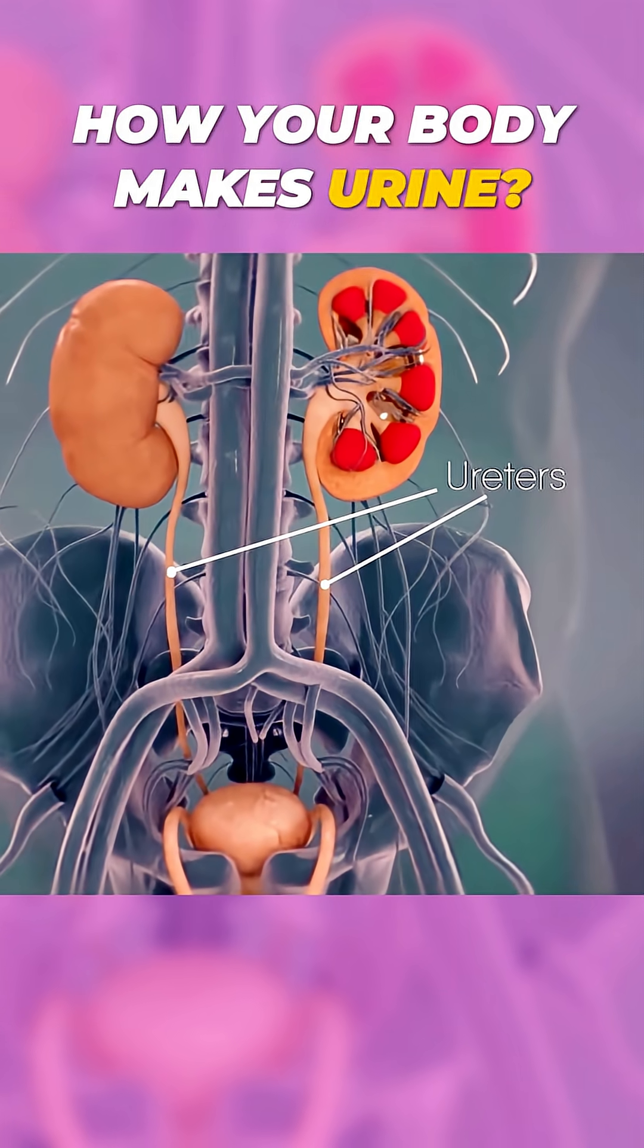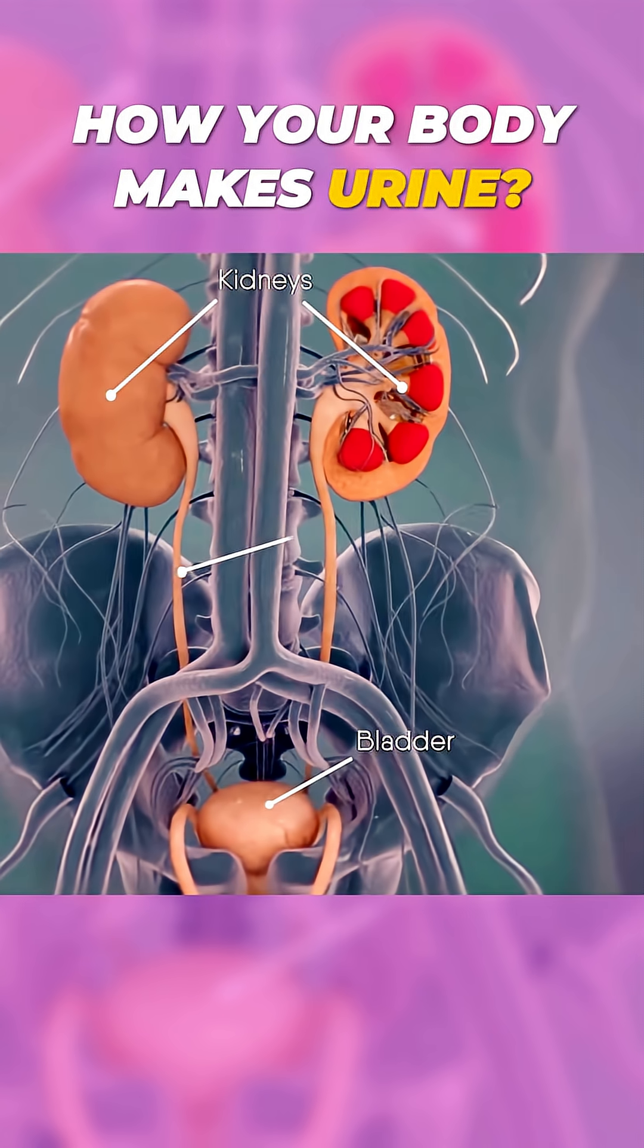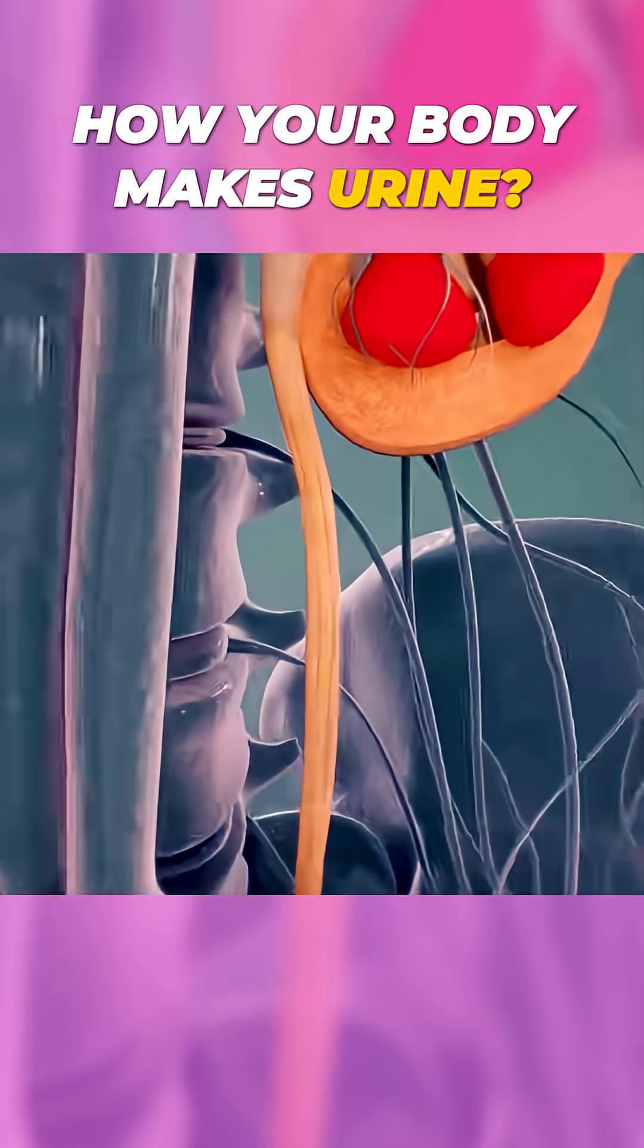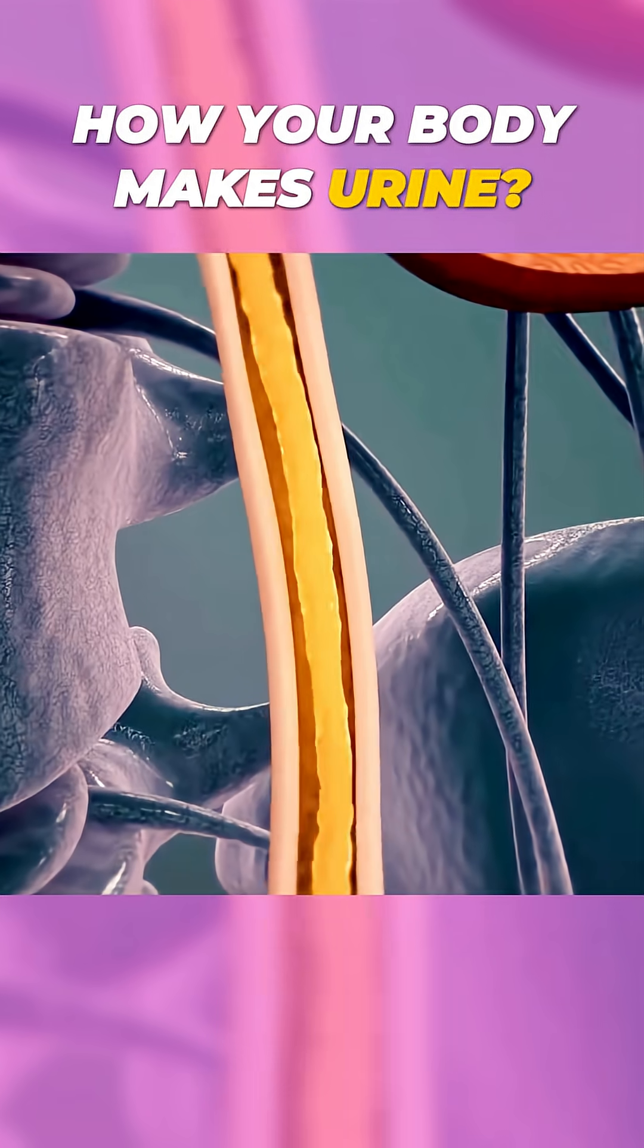The ureters are tubes that carry urine from the kidneys to the bladder. Muscles in the ureter walls push urine down to the bladder, stopping it from backing up.